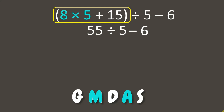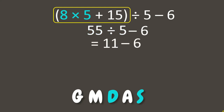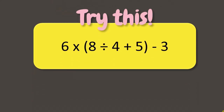The last two operations are division and subtraction. According to the rule, we divide first: 55 divided by 5 equals 11. Then subtract 6 from 11, which gives us the answer 5. Now it's your turn, students — can you try this?